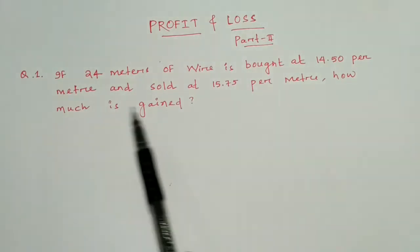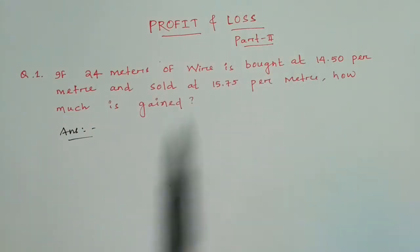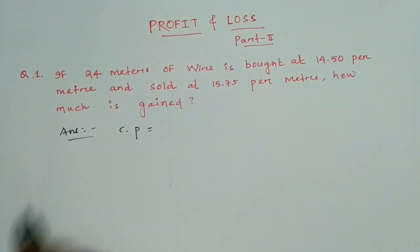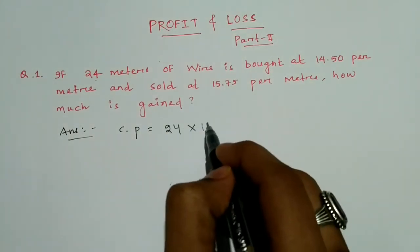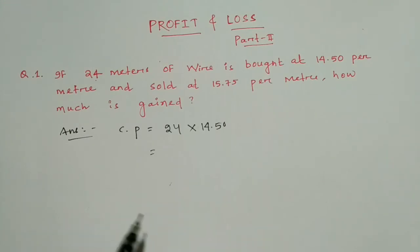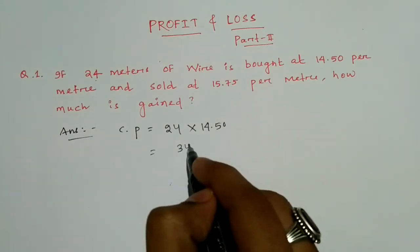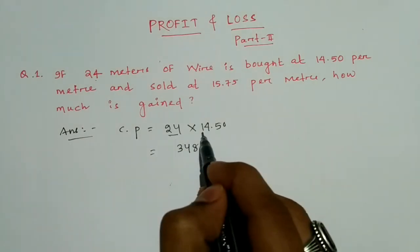Every time you read the question, try to write it on your notes. The first sentence says 24 meters of wire bought at 14.50 rupees — 'bought' means this is the cost price. So cost price equals 24 meters at 14.50 per meter, meaning total cost is 24 × 14.50. Doing this calculation we get 348 rupees.